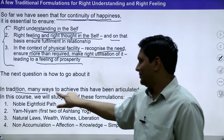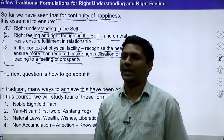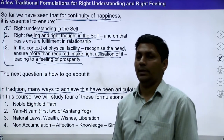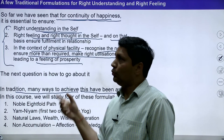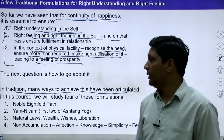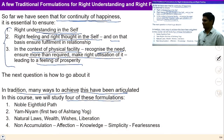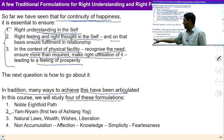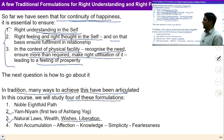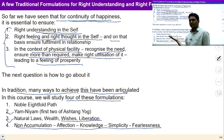In tradition, many ways to achieve this have been articulated. There are many formulations available in our culture to help us achieve the same. We will study Nobel Eightfold Path, then Emnium, then Natural Laws — Wealth, Wishes, Liberation is another formulation. Similarly, another formulation is Non-accumulation, Affection, Knowledge, Simplicity and Fearlessness. There are many formulations in tradition to achieve these three points in ourselves.